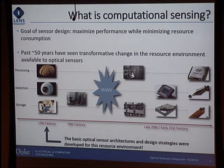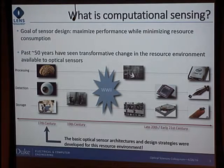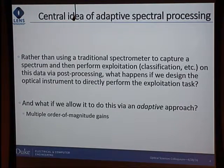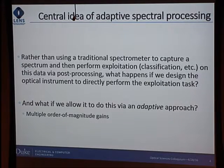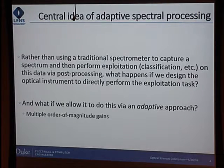Traditional sensors make pretty pictures you interpret with your brain, or disperse light linearly for spectral analysis. Computational sensing is about thinking of the sensor as an inverse problem — one we can structure to make more robust or powerful by designing the nature of the physical measurement. Rather than using a traditional spectrometer to capture the spectrum and then doing post-processing exploitation — classification, detection, and so on — what if we design the optical instrument to do the exploitation task directly? And if we're designing measurements optimally, we can do it adaptively. In my group, we've consistently seen multiple orders of magnitude gains in performance when we do this.